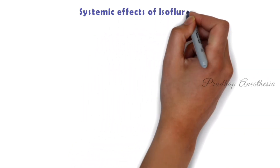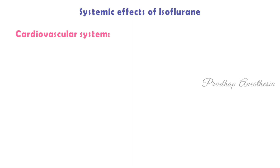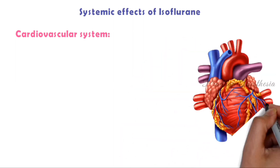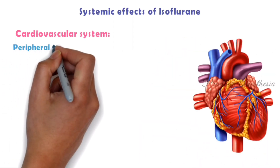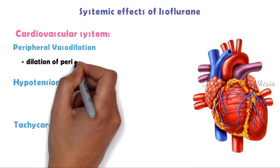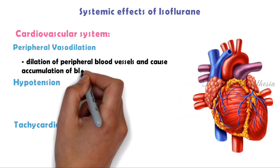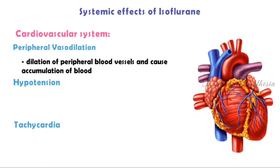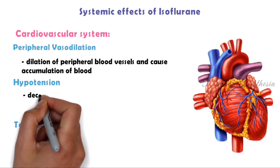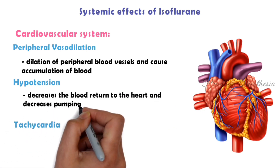Systemic effects of isoflurane — cardiovascular system. On the cardiovascular system, it causes peripheral vasodilation, hypotension, and tachycardia. Whenever we give isoflurane, there is a dilation of peripheral blood vessels, causing accumulation of blood. This decreases blood return to the heart and decreases pumping out of blood, leading to decreased blood pressure.